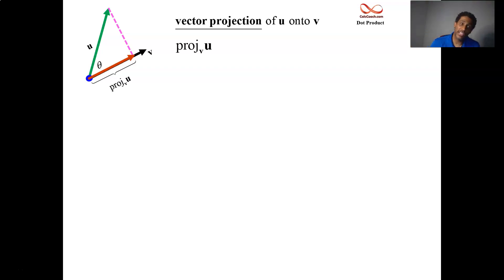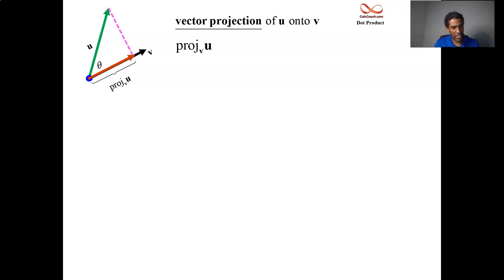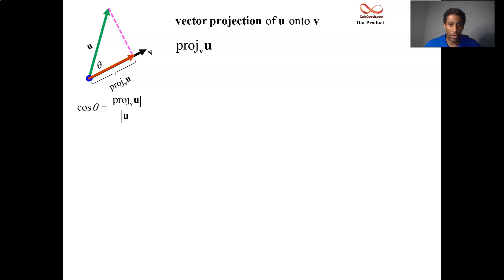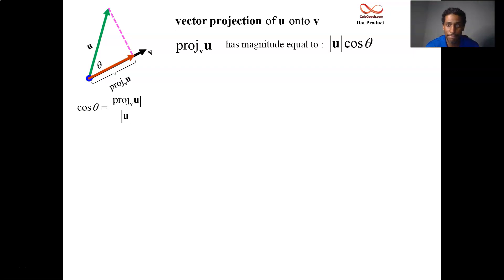We can look at this right triangle — drop down the perpendicular and use trig, but now with vectors instead of side lengths, so we use magnitude bars. The cosine of theta is the adjacent over the hypotenuse, so cosine of theta equals the magnitude of the projection vector divided by the magnitude of U (the hypotenuse). U isn't necessarily a unit vector; I'm just using the letter U. To find the magnitude of the projection vector, multiply both sides by |U|, and you get that the magnitude of the projection vector equals |U| times cos(theta).